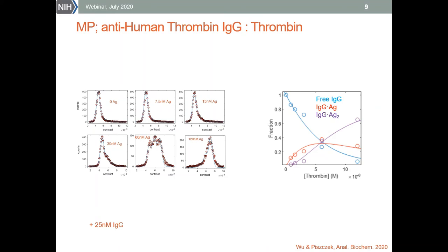The main difficulty of this type of analysis is the Gaussian fitting of the distributions. We want to extract the concentration information about the population of all three species, and this is relatively easy when all three peaks are well defined — like for the 16 nanomolar antigen sample — but for distributions dominated by a single peak, the error intervals of Gaussian fits increase dramatically.